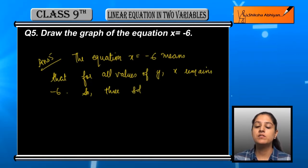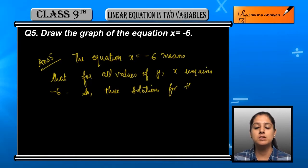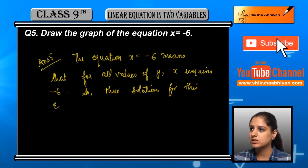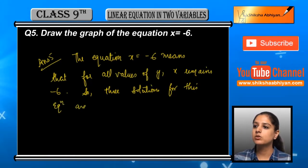This means that for all values of y, as many values as we can plot on the graph, y can take any values but x's value is always minus 6.